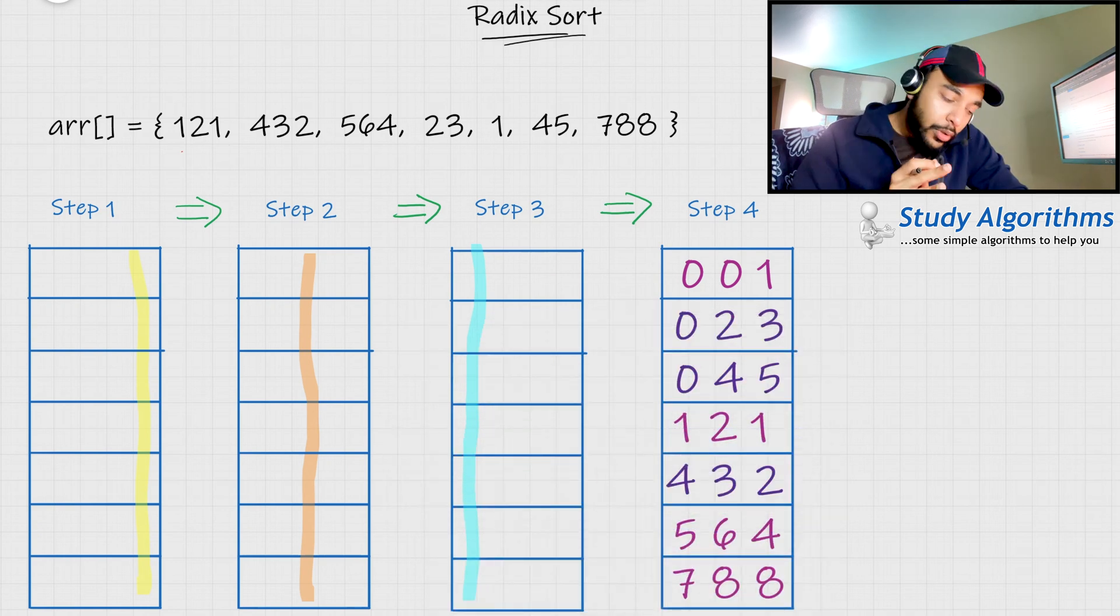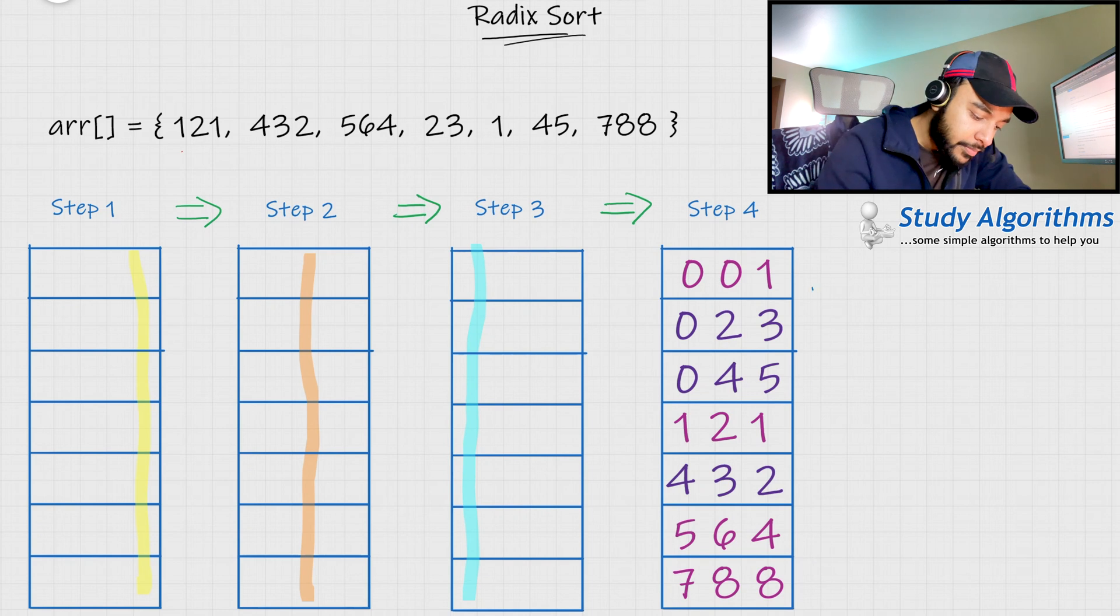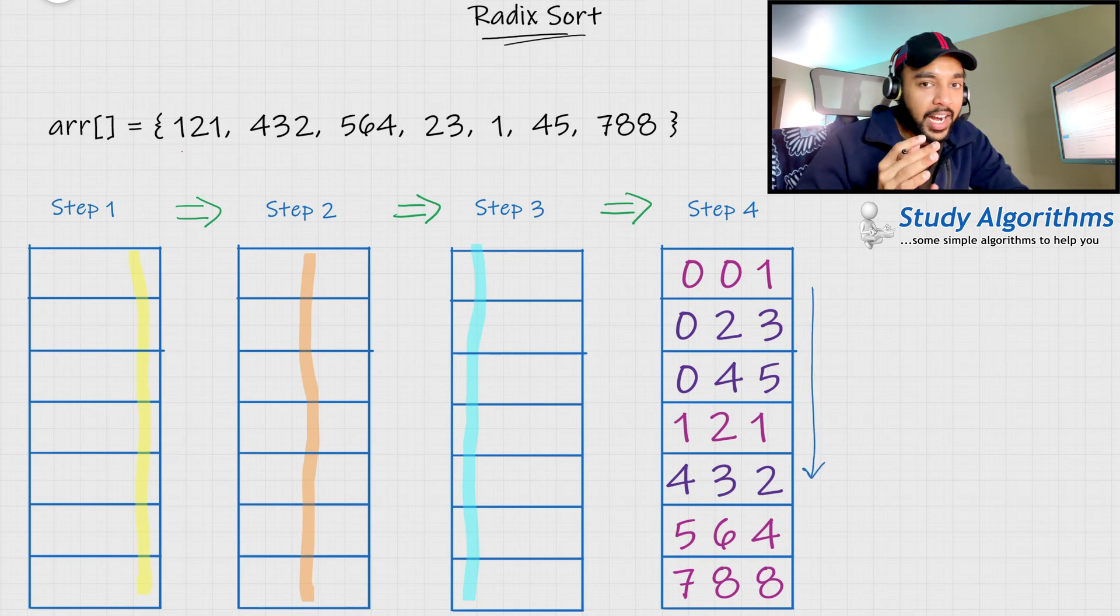Similarly, so as you can see, ultimately in the last step, we have all of these elements sorted in an ascending order. And this is how a Radix sort algorithm works. Quite simple, right?